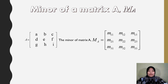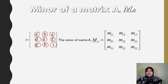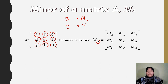We found the minor for each element. Each element has its own minor, so for one matrix we get a set of minors — this is called the minor of matrix A. As mentioned, we use capital M with subscript A. If you have matrix B, its minor is M_B. If you have matrix C, its minor is M_C.